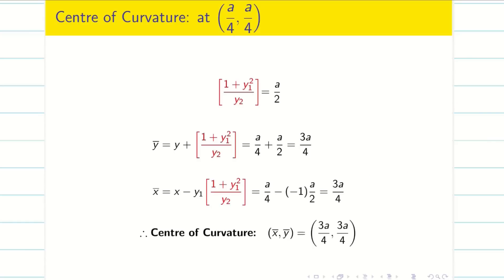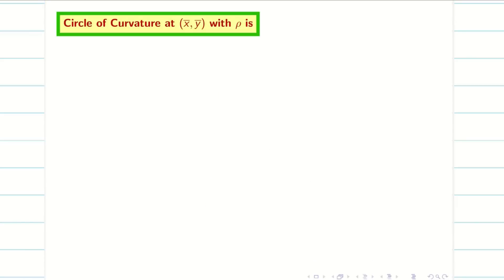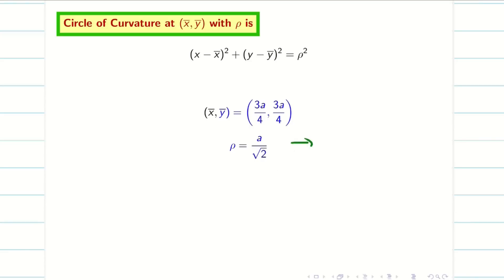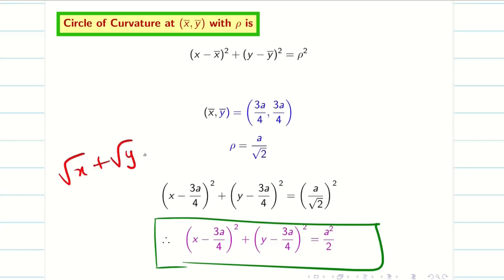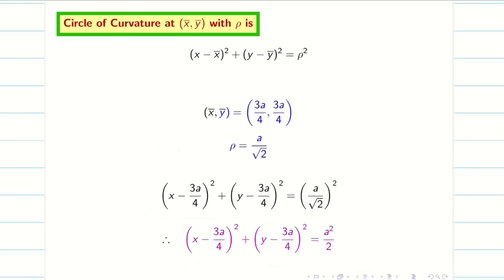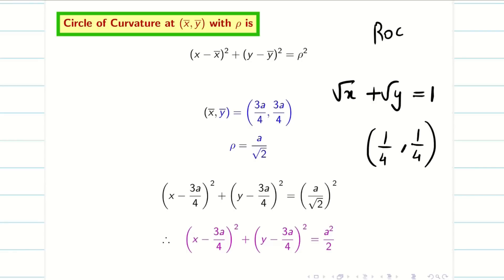The final step is to find the circle of curvature. Write the formula, substitute x̄, ȳ, and ρ. Squaring ρ gives a²/2. Therefore the circle of curvature for √x + √y = √a at the point (a/4, a/4) is obtained. From an exam perspective, they may ask the same problem with specific values, for example √x + √y = 1 at (1/4, 1/4), asking for ROC or COC, and you can easily solve it from this.